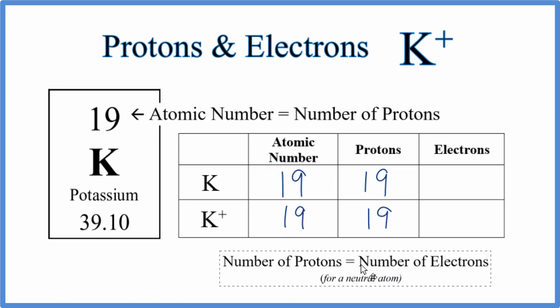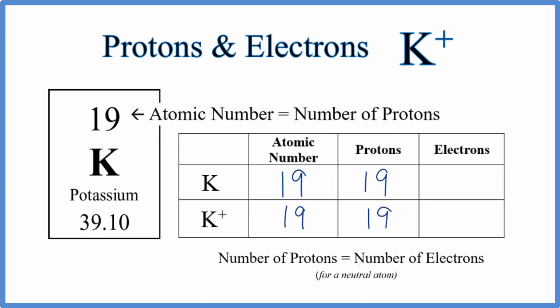So when we have a neutral element, the number of protons and electrons is going to be the same. For potassium, there's nothing written after. There's not a negative or a positive sign. So we know this is neutral and the number of protons going to equal the number of electrons. 19 protons, 19 electrons.